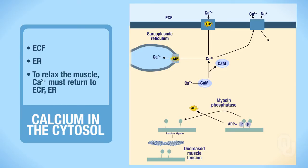In order for muscle to relax, the calcium must be put back in those two locations. In skeletal muscle, this is done using calcium ATPase on the membrane of the sarcoplasmic reticulum, which is the same as the membrane of the endoplasmic reticulum. This also occurs in smooth muscle, so the mechanism for reabsorbing calcium back into the SR is the same for smooth and skeletal muscle.